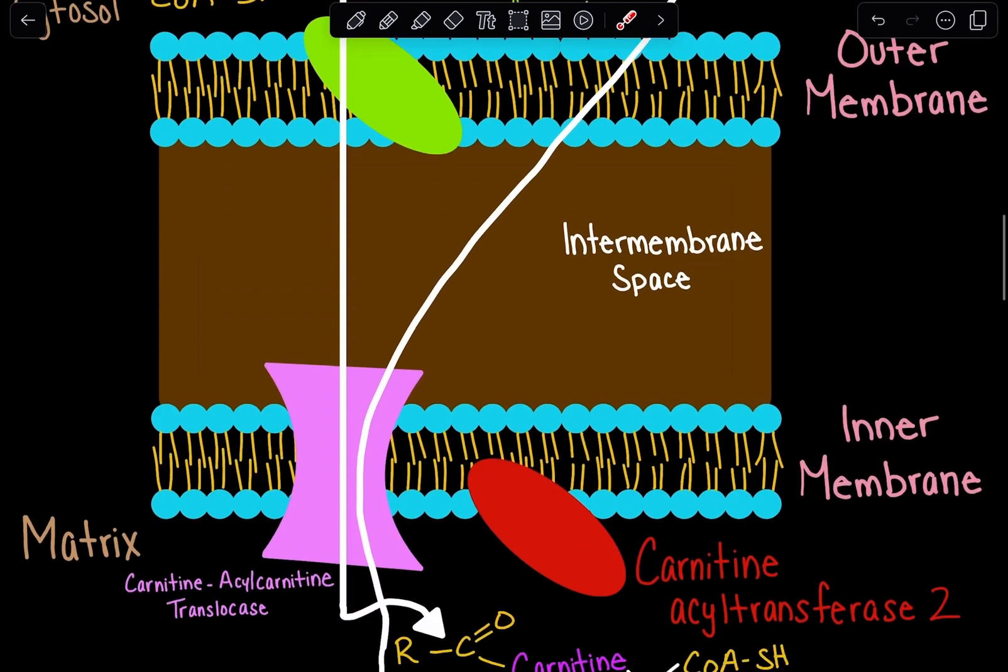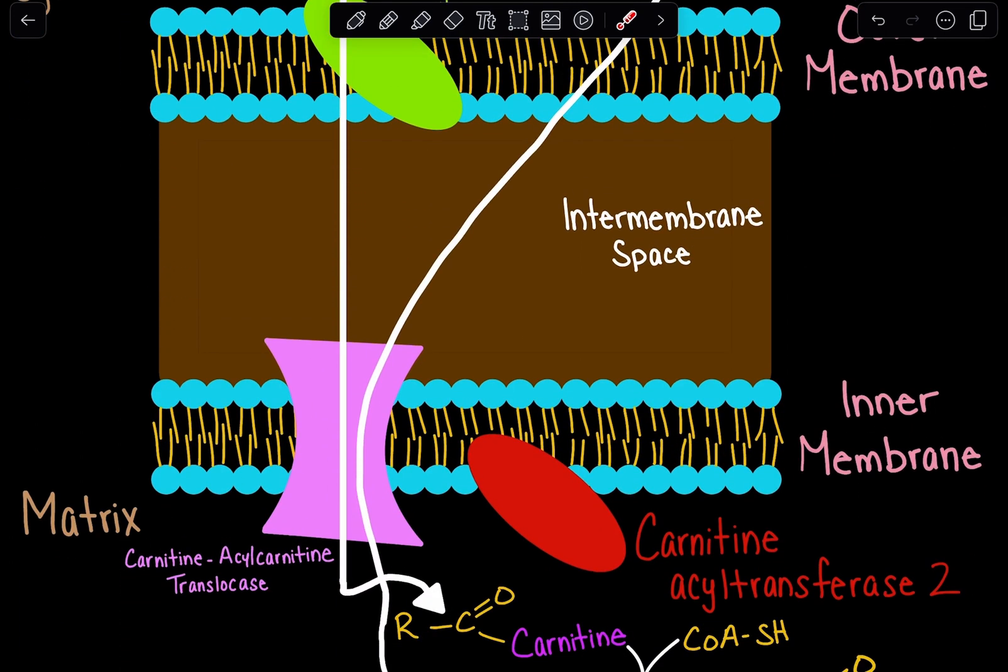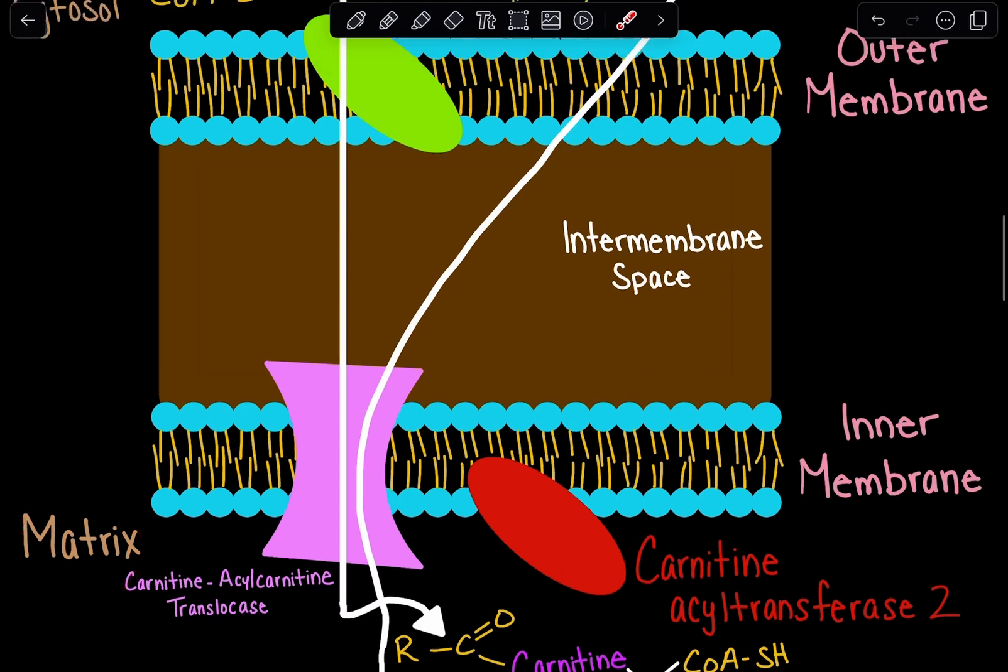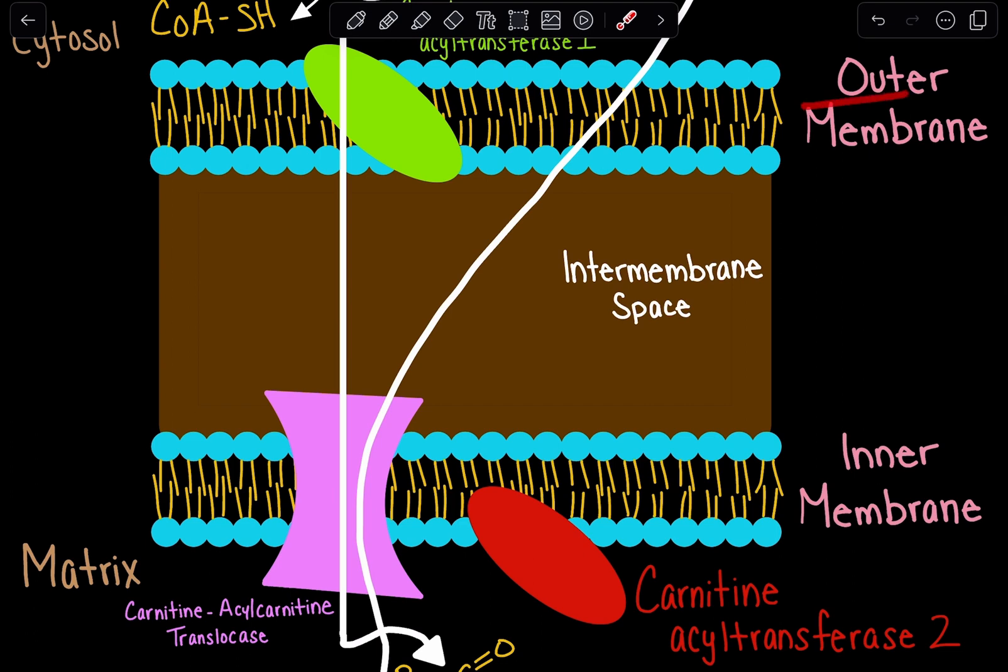As we can recall, fatty acid oxidation occurs in the mitochondrial matrix. But remember that the mitochondria has two membranes: an outer membrane and an inner membrane.